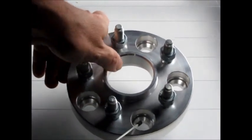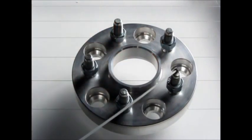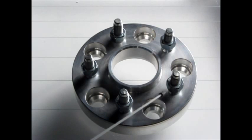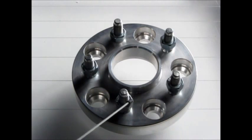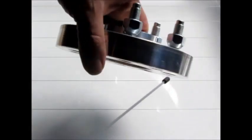This particular one changes the bolt pattern from a five by 120 on the vehicle to a five by 112 on the wheel. Your vehicle always comes first when you're talking about the adapter size. So this would be a five by 120 to five by 112 hub centric and wheel centric adapter, one inch thick.